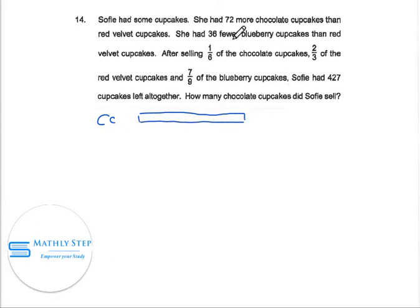Chocolate cupcakes is 72 more than red velvet. So this is RV. Red velvet is 72 less. So from here to here is 72. And she had 36 fewer blueberry cupcakes than red velvet. So this is blueberry, we call it BB. It's 36 fewer.